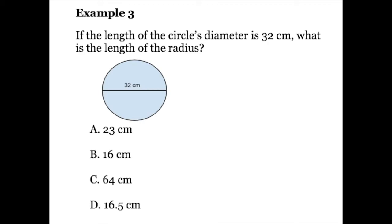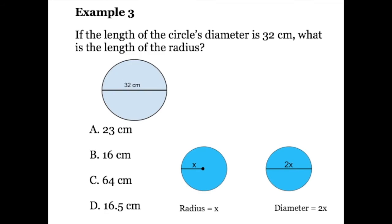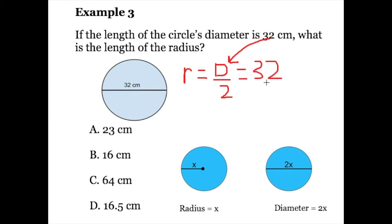One last example: if the length of the circle's diameter is 32 centimeters, what is the length of the radius? In the last problem we went from radius to diameter; here we're given the diameter and want to find the radius. Pause the video if you want to try it. To find the radius we use the formula r equals D over 2. Since the diameter is 32 centimeters, we plug 32 into the formula: 32 divided by 2 gives us 16. So the answer is 16 centimeters, and B is correct.